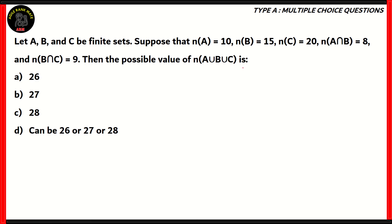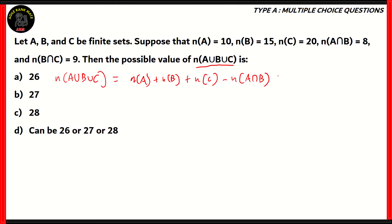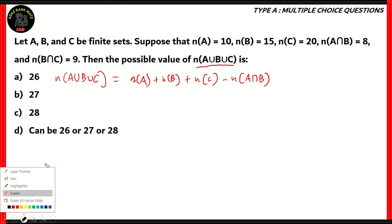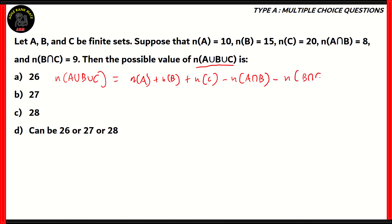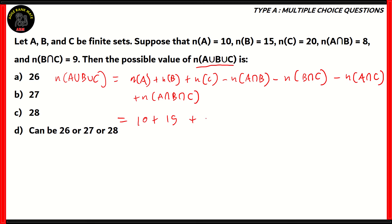So how do we solve this question? Well, let's find the actual value of N(A∪B∪C). N(A∪B∪C) equals N(A) plus N(B) plus N(C) minus N(A∩B) minus N(B∩C) minus N(A∩C) plus N(A∩B∩C). Now some of these values are given: N(A) is 10, N(B) is 15, N(C) is 20, N(A∩B) is 8, N(B∩C) is 9.